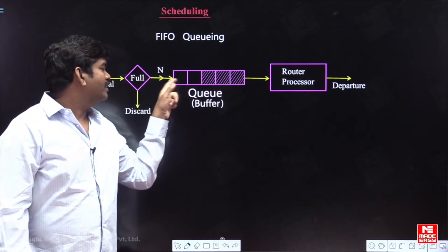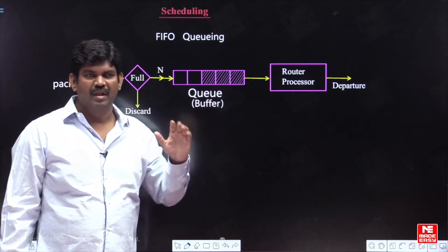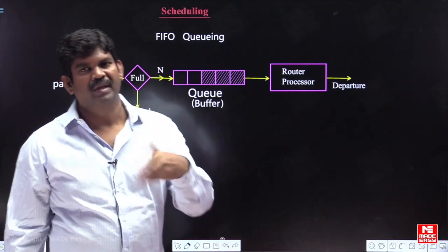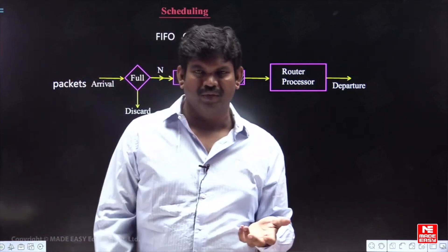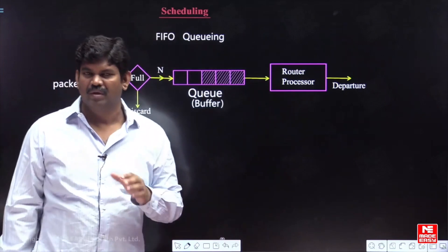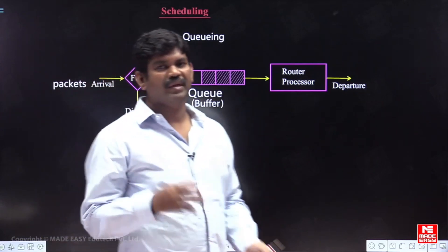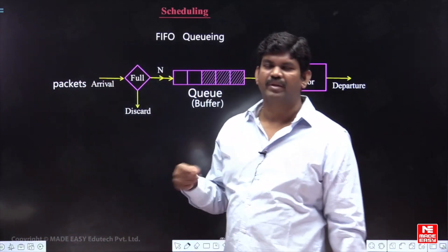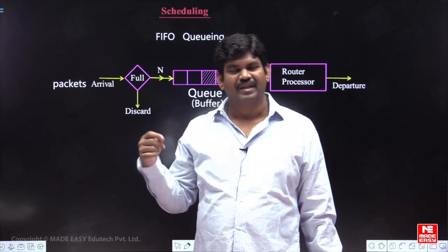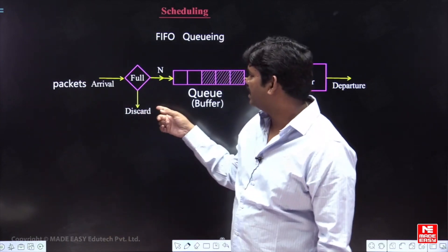If the queue is completely full — meaning the queue is completely filled with packets which are coming earlier from different sources — you have to check that condition. Because if the queue is completely full, it cannot take further packets. Then you can say the router is congested, and the packets will be dropped. That is why we are checking this condition.